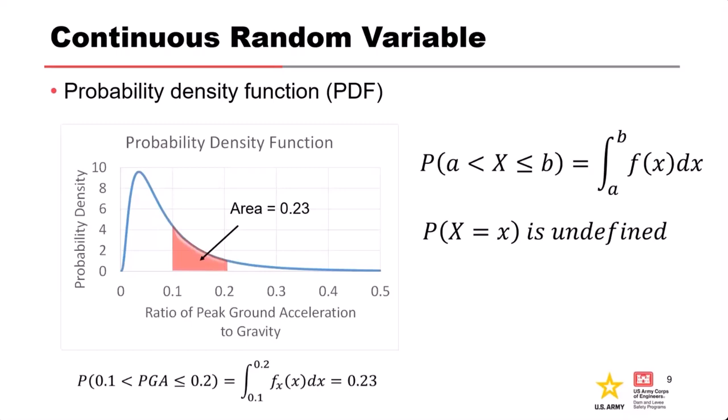To get a probability, you look at a range of values. For example, what's the probability that PGA is between 0.1 and 0.2 G? To get that from the probability density function, you compute an integral — the area under the function between 0.1 and 0.2. That area is 0.23, which equals the probability. The formal way is to integrate the density function between the two values of interest.